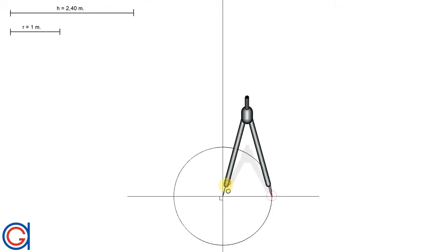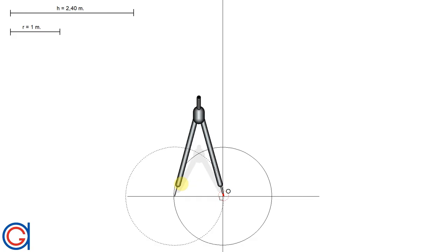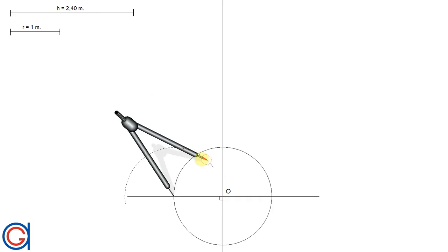So setting our compass on the left extremity of the horizontal diameter, we scribe a semi-circle, cutting our previously drawn circle at two new points.